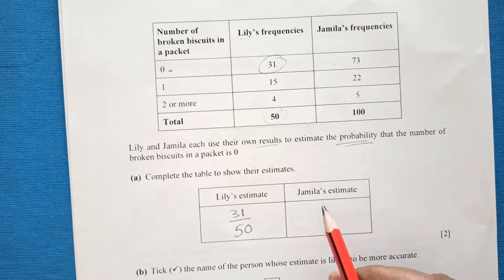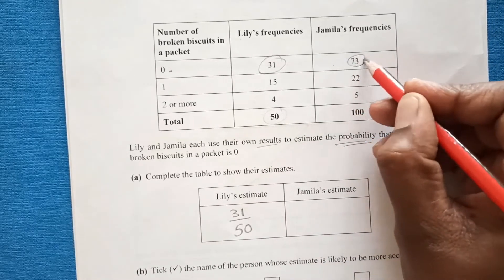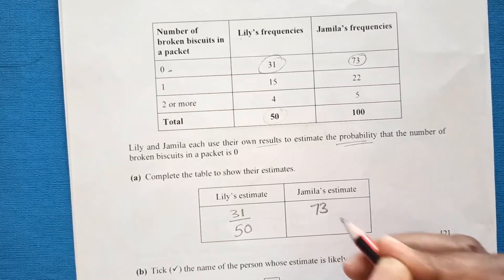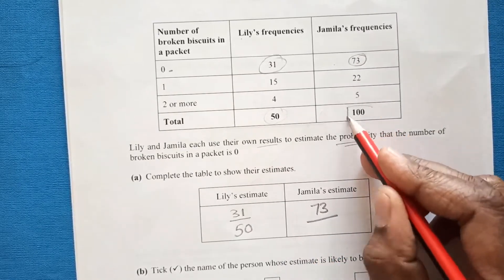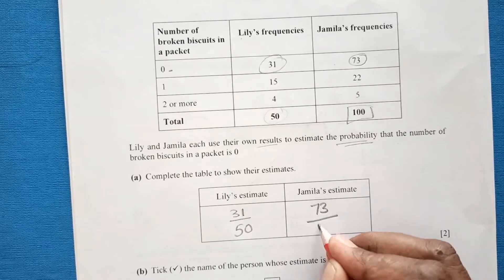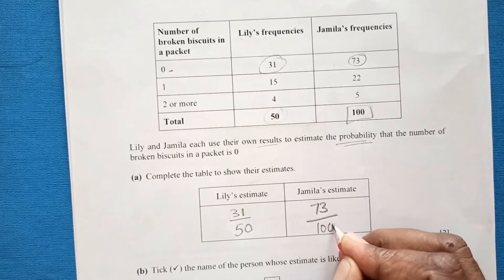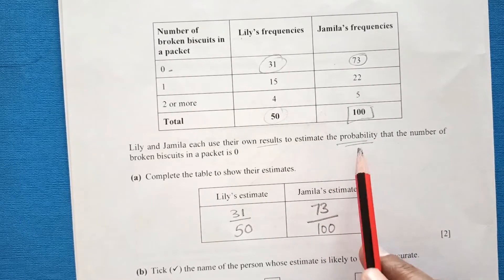Now Jamila. She has the frequency 73 and she opened a total of 100 packets. So her estimate is 73 over 100.